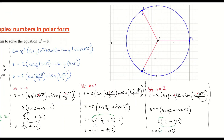Let's recap using the diagram showing the three roots. The first root z₁ = 2 + 0i sits on the positive real axis. The second root z₂ = −1 + √3 i is here, going minus 1 along the real and positive √3 up the imaginary. The third root z₃ = −1 − √3 i is here. Those are the three roots solving z³ = 8.